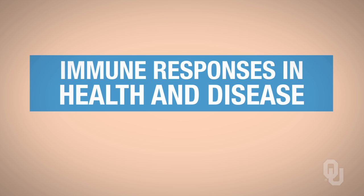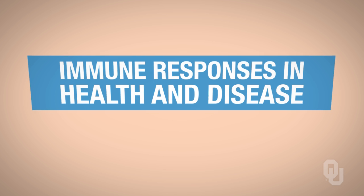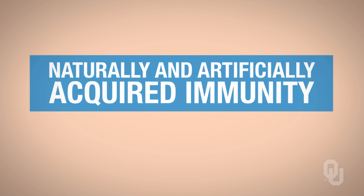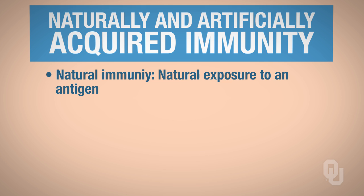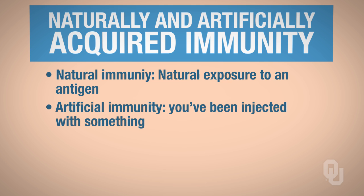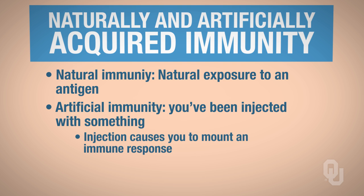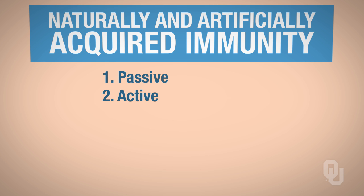In this part, we're going to focus on immune responses in health and disease. To begin with, we want to look at naturally versus artificially acquired immunity. When you think about natural immunity, you've somehow been exposed naturally to an antigen. If it's artificial immunity, then you've been injected with something, and that injection caused you to mount an immune response. Regardless of whether it's natural or artificially acquired immunity, you have two different forms: passive and active.